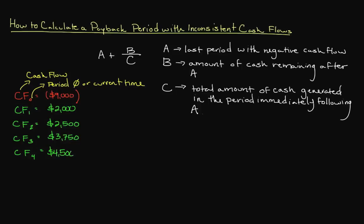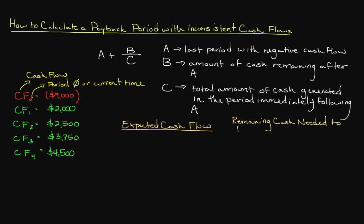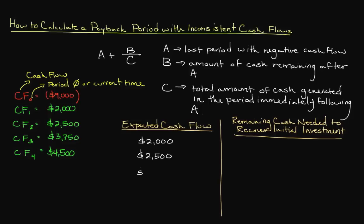When calculating the payback period for inconsistent cash flows, I find it helpful to use a two-column approach. The first column contains our expected cash flows in order from when we expect to receive them. The second column contains the remaining cash needed to cover our initial investment of $9,000. We simply subtract each expected future cash flow from our initial investment.